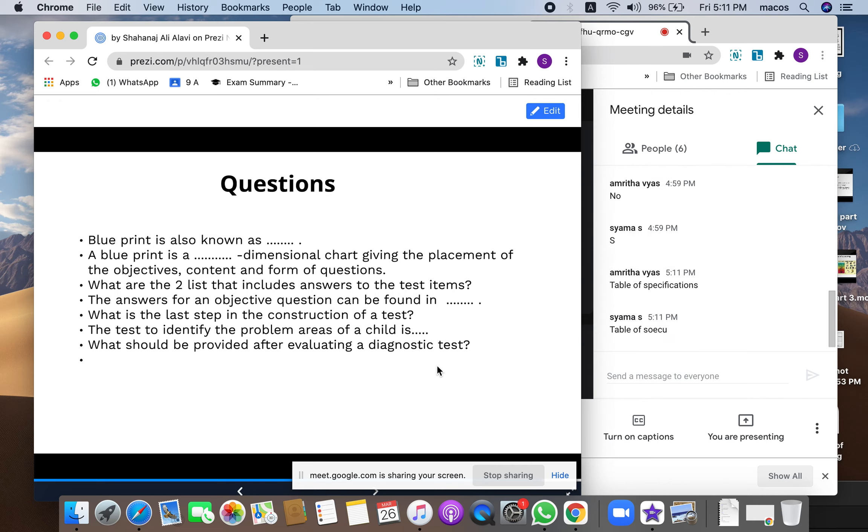Table of specifications - it is important that this table of specification is also known as blueprint. So a blueprint is a three-dimensional chart giving the placement of the objectives, content, and form of questions.